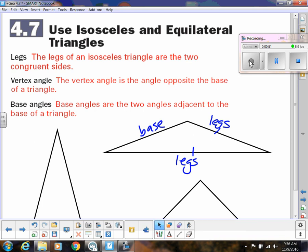The vertex angle is the angle that's in between the two legs, or another way you can think of it as it's opposite of the base. So this would be the vertex angle, and it's in between the two legs. So the two legs create the sides of that angle.